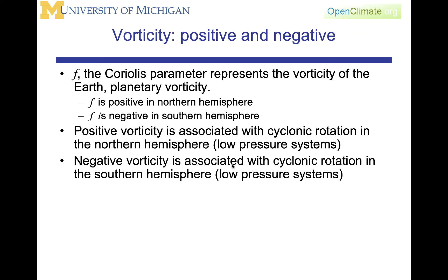Negative vorticity is associated with cyclonic rotation in the southern hemisphere, which is also associated with low-pressure systems. Therefore, our definition of cyclonic — which stands in contrast to anticyclonic — has the vorticity associated with the low-pressure system aligning with the vorticity of the planet. Cyclonic systems are places where planetary vorticity and the vorticity of a low-pressure system accumulate to produce a lot of rotation, high winds, and high curvature. Anticyclonic systems are the opposite of that.